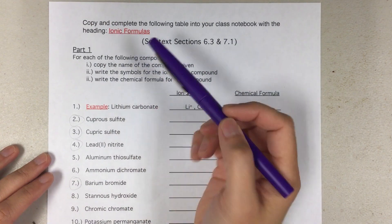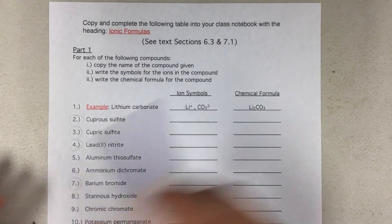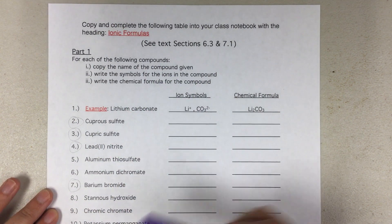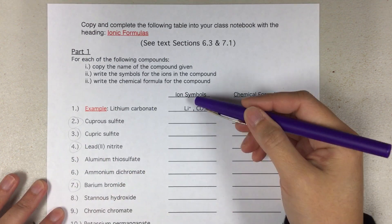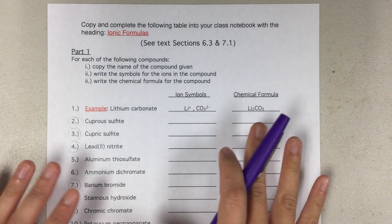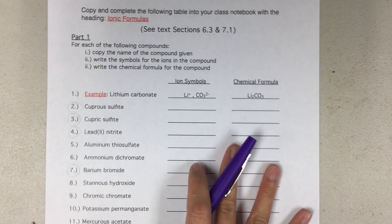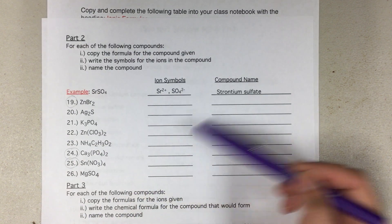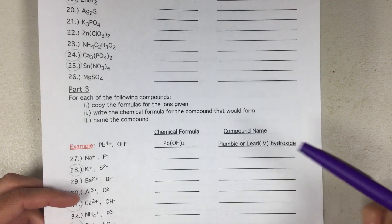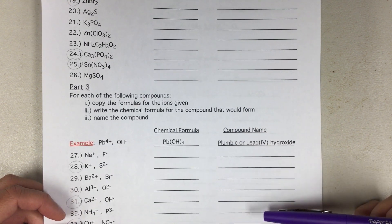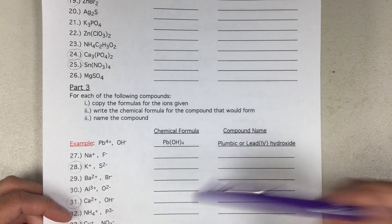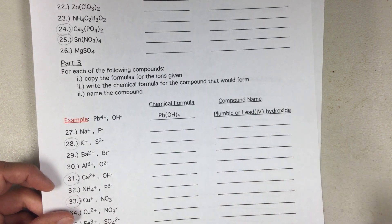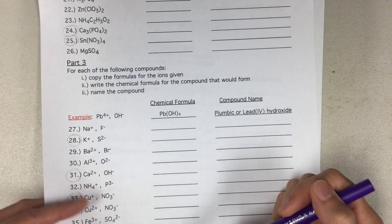This is a video that goes over your ionic formulas homework assignment. This assignment is on the lesson calendar and you will copy the questions into your notebook and then answer the ion symbols and chemical formulas for part one. There are three parts. Part two, you're given the formula and need to give the ion symbol and the compound name. Part three, you will give the chemical formula and the compound name. Just keep in mind that you're copying this into your notebook, including the question in your answer. Making three columns would probably be the easiest way to do all three parts.